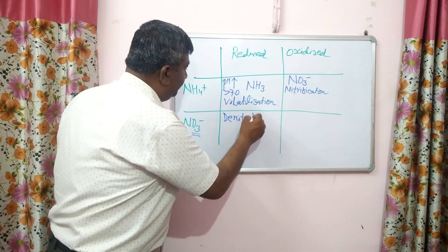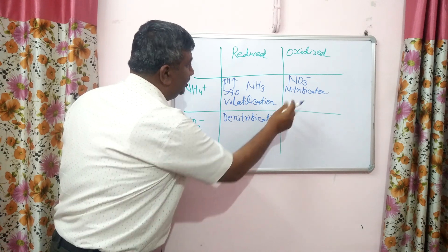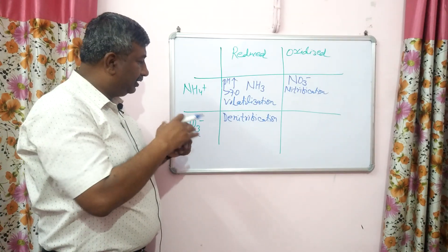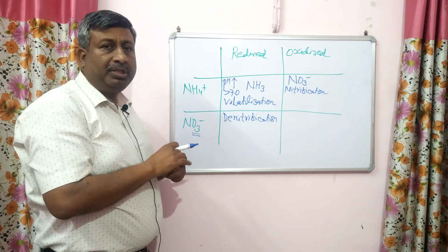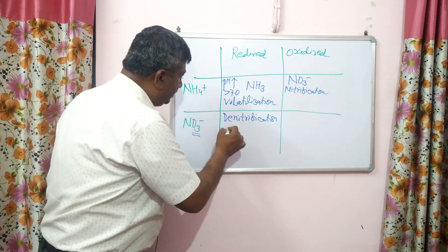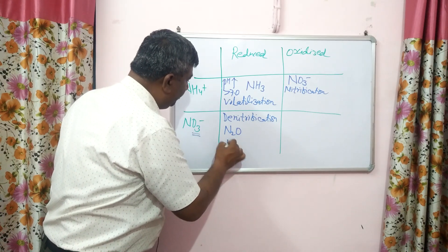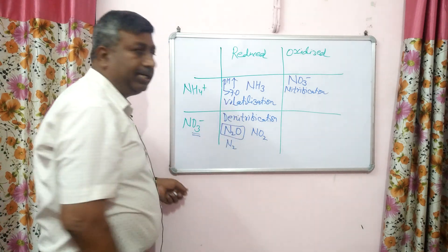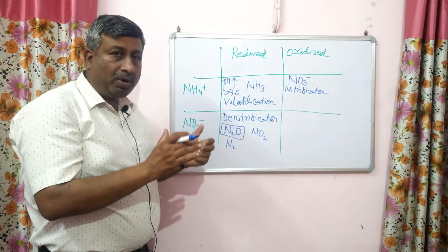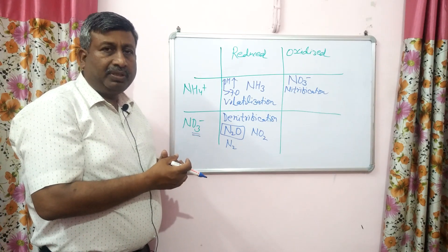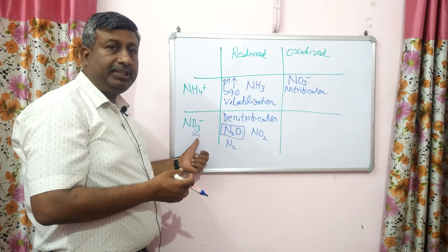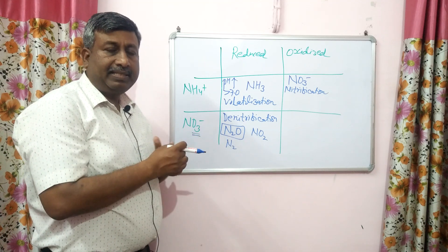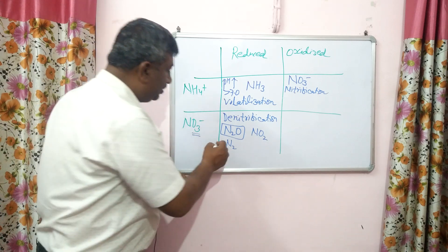This process is known as denitrification. 'De-' means to separate — nitrification forms nitrate, and denitrification means nitrate is converted into other forms. Mainly it is converted into N₂O (nitrous oxide), but may also be converted into N₂ or NO₂. Under reduced condition, when there is no air and microbes require oxygen for respiration, they use the oxygen in nitrate, producing these gases.